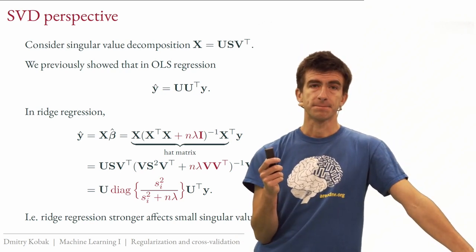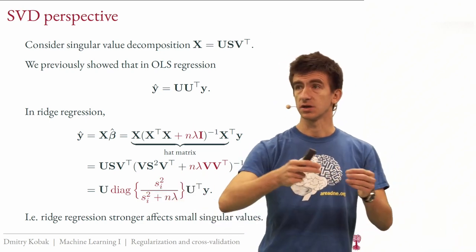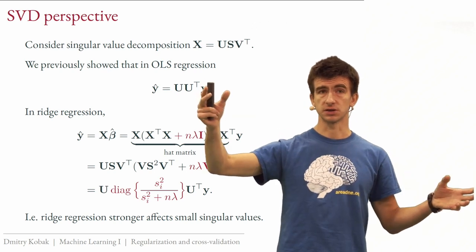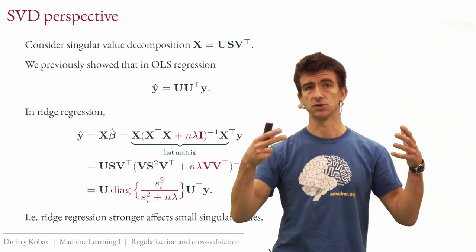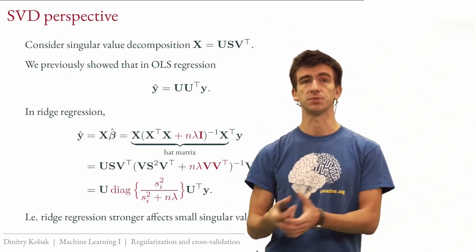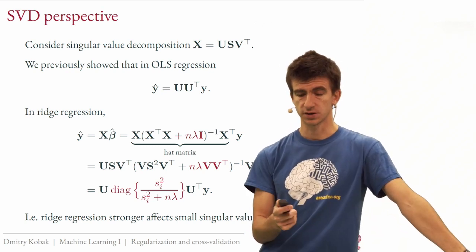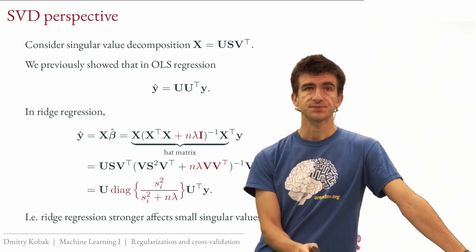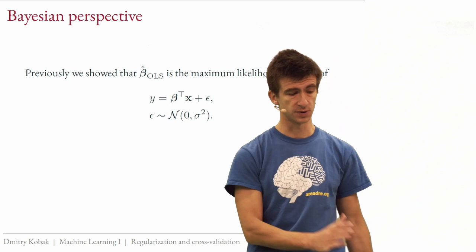The directions in which the singular value is large are directions where the data gives reliable information — those are not strongly penalized. The directions with small singular values, where the estimate is uncertain, are the ones that ridge regression effectively shrinks. This is a very useful perspective on what ridge regression is actually doing.